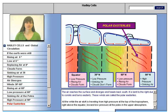The air reaches the surface and diverges, heading back south. It is bent to the right due to Coriolis and turns easterly. These winds are called the polar easterlies.